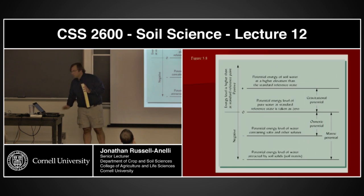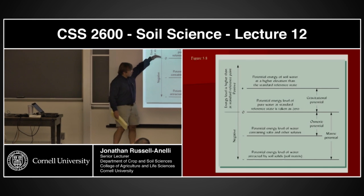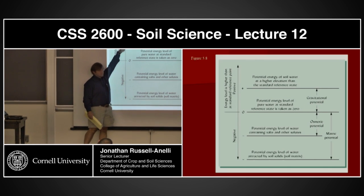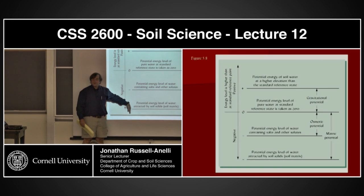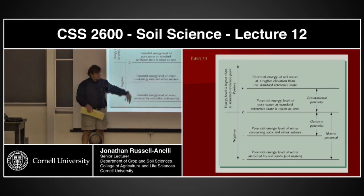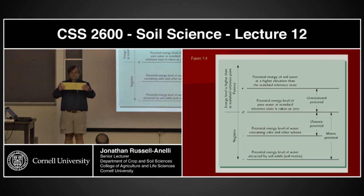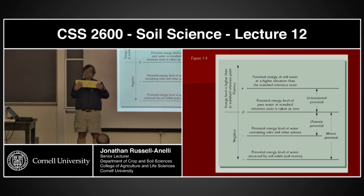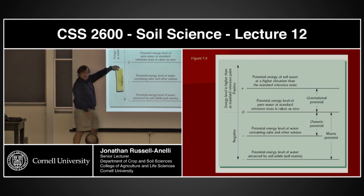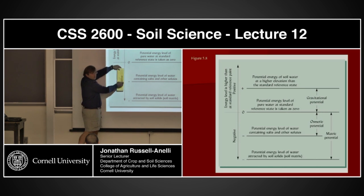So if we go back to this graph, more negative is this way. If I have more matrix potential than another location, I'm meaning this way relative to here. So the wet side would have less negative matrix potential; the dry would have more. So this is pulling the water this way, and you're going to equilibrate somewhere in the middle.